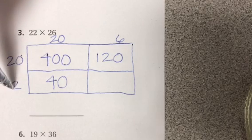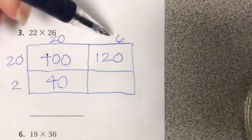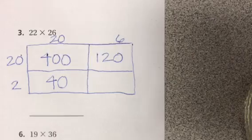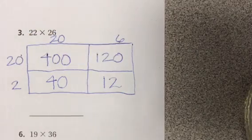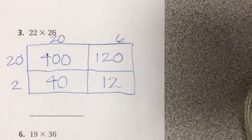And lastly I'm going to multiply 2 times 6 which is 12. We didn't cover up any zeros so it's just 12.